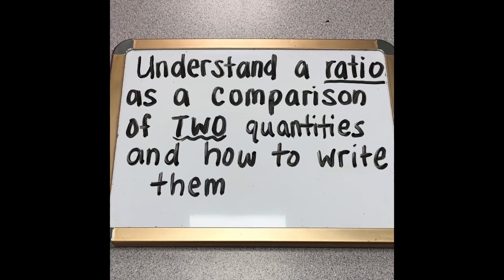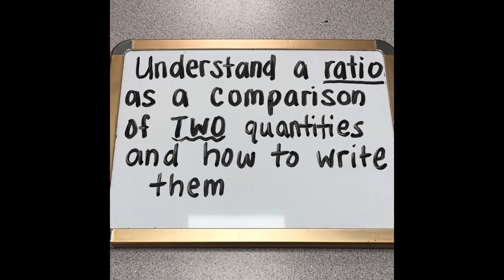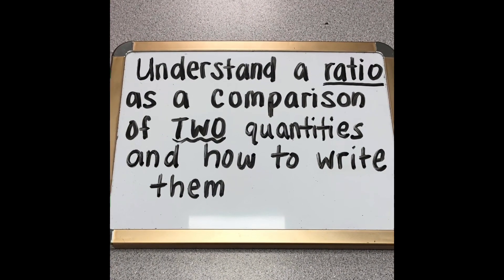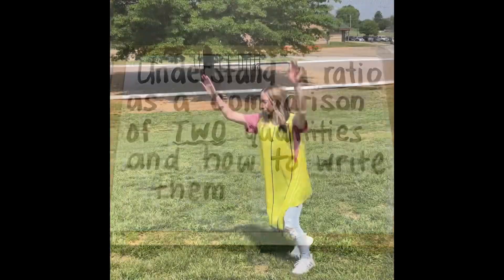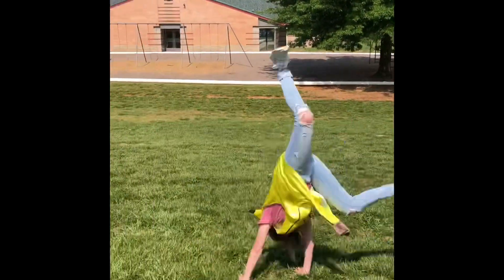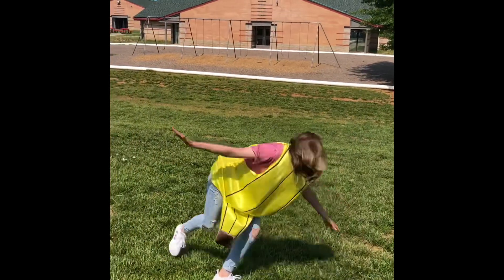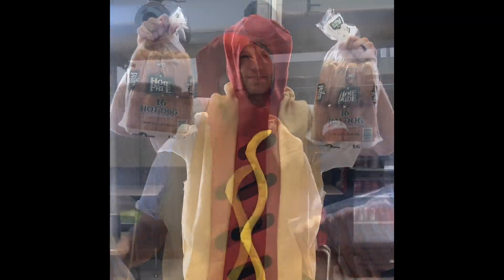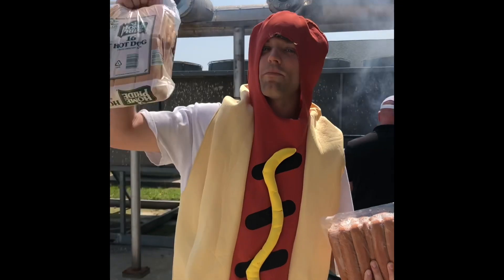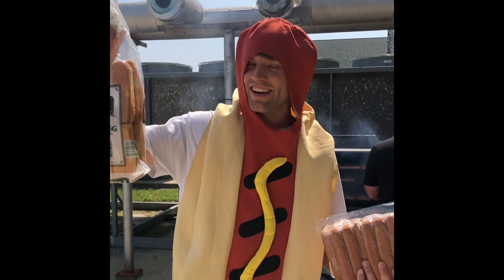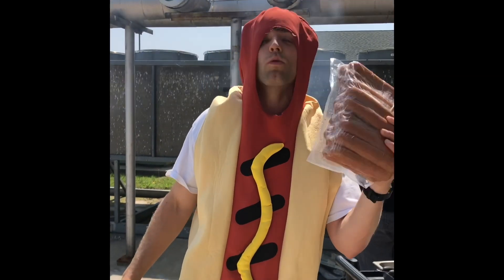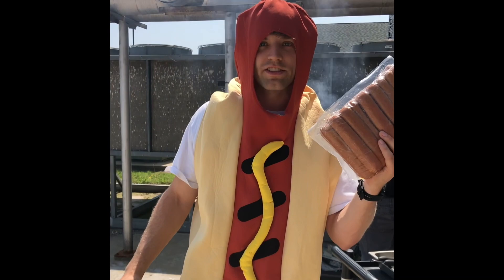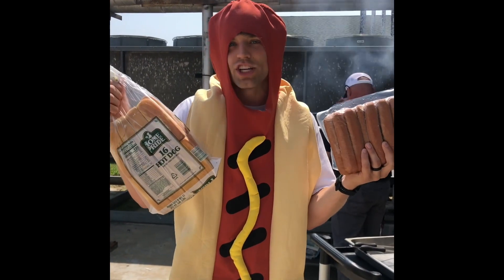First is: I can understand a ratio as a comparison of two quantities and how to write them. So what does that look like? Let's say you have a package of 16 hotdog buns and 20 hotdogs — or we'll call them Franks. You'll have to use ratios to compare these two.